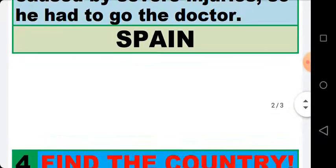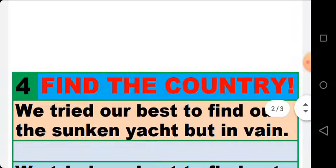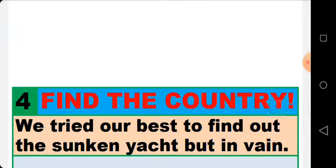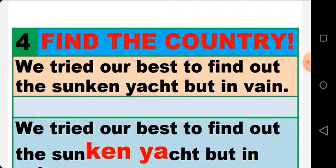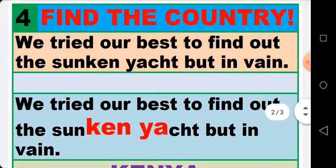The next activity, number four. Pause the video, stop the video, and try your best to find the name of the country. The answer is Kenya — the last three letters of the word 'sunken' and the first two letters of the word 'yacht' give us Kenya. The name of the country is Kenya.